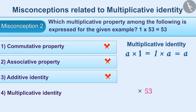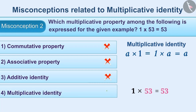The correct way of understanding is: when a number is multiplied by 1, the result will be the same number. This is the identity for multiplication, also called multiplicative identity. Therefore, option 4 is the correct answer.